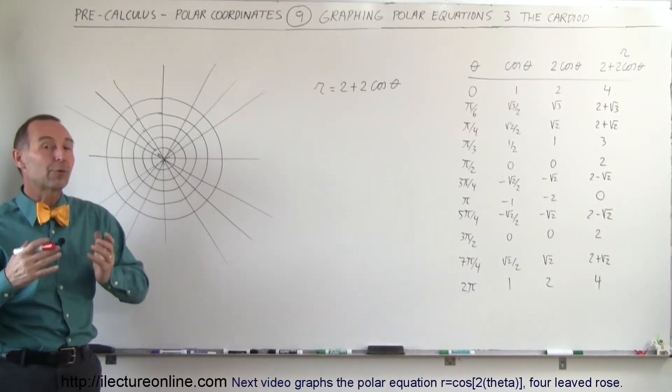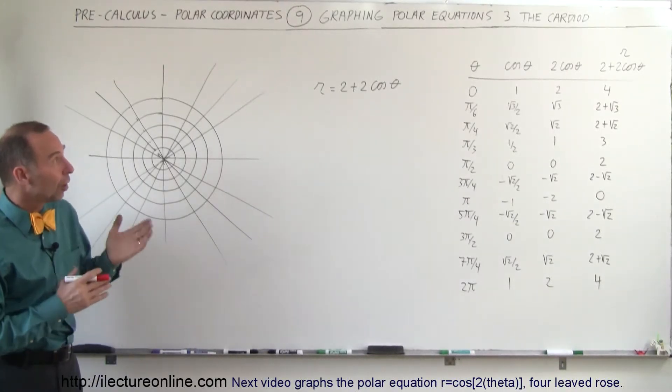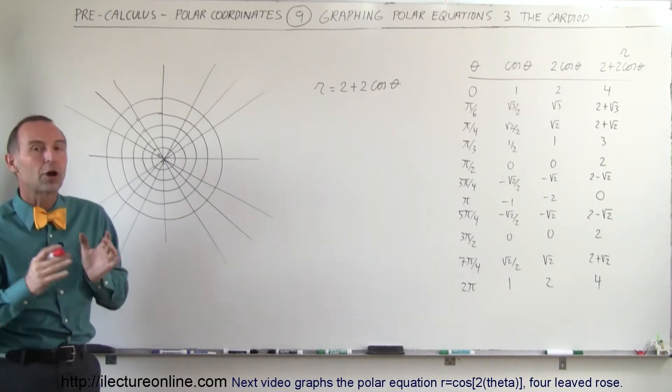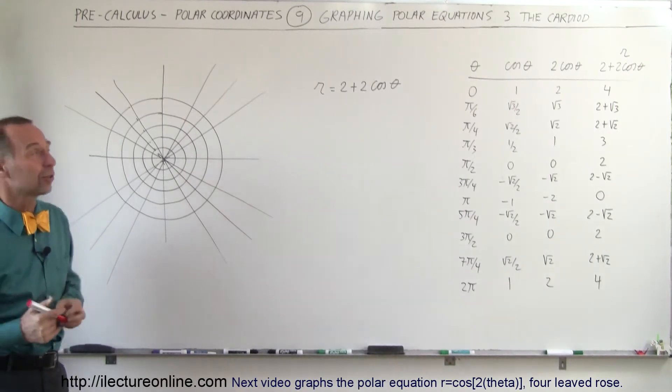Welcome to our lecture online, and now we're going to graph a polar equation, r equals 2 plus 2 times the cosine of theta, which ends up making a graph that is called the cardioid. So let's see what that looks like.